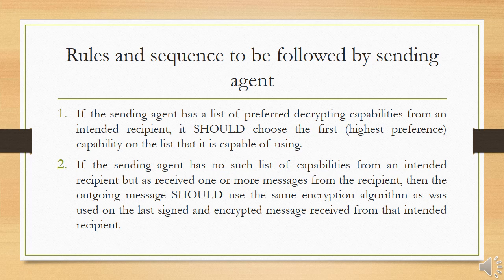Here are the rules and sequence to be followed by the sending agent. If the sending agent has a list of preferred decrypting capabilities from an intended recipient, it should choose the first — that is, the highest preference capability on the list that it is capable of using. If the sending agent has no such list of capabilities from an intended recipient,